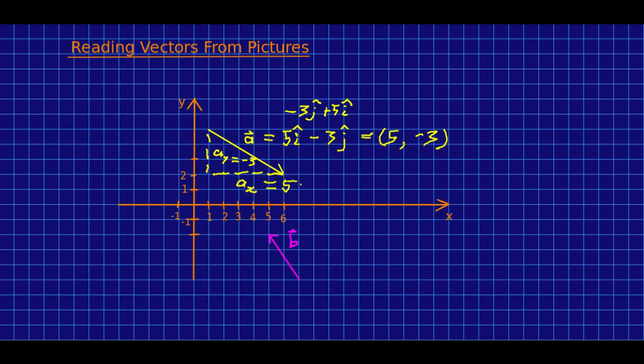Note many students would look at this vector and incorrectly say that its x component is six and its y component is two. Do you see why they would say that? That's where the end is isn't it? But that's not what we care about. What we care about is how far over and down this vector carries us. So similarly this b I hope you can see is negative two i-hat plus three j-hat.